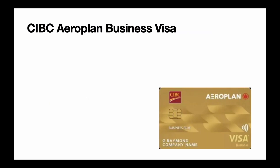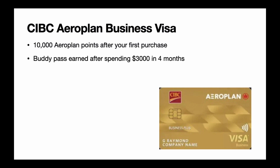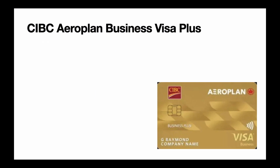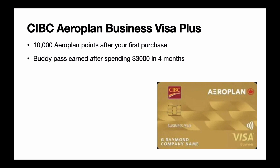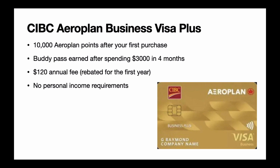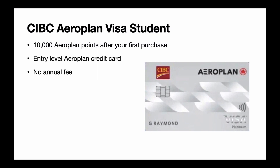Next is the CIBC Aeroplan Business Visa card — 10,000 Aeroplan points after your first purchase, a buddy pass after spending $3,000 within the first four months, a $180 annual fee rebated for the first year, and a personal income requirement of $35,000. Next is the CIBC Aeroplan Business Visa Plus — 10,000 points after first purchase, a buddy pass after spending $3,000 in the first four months, a $120 annual fee rebated for the first year, and no income requirement (though business review is required). Finally, the CIBC Aeroplan Visa Student card — 10,000 points after first purchase, entry-level, no annual fee for the first year. It's essentially the same as the CIBC Aeroplan Visa but made for students.